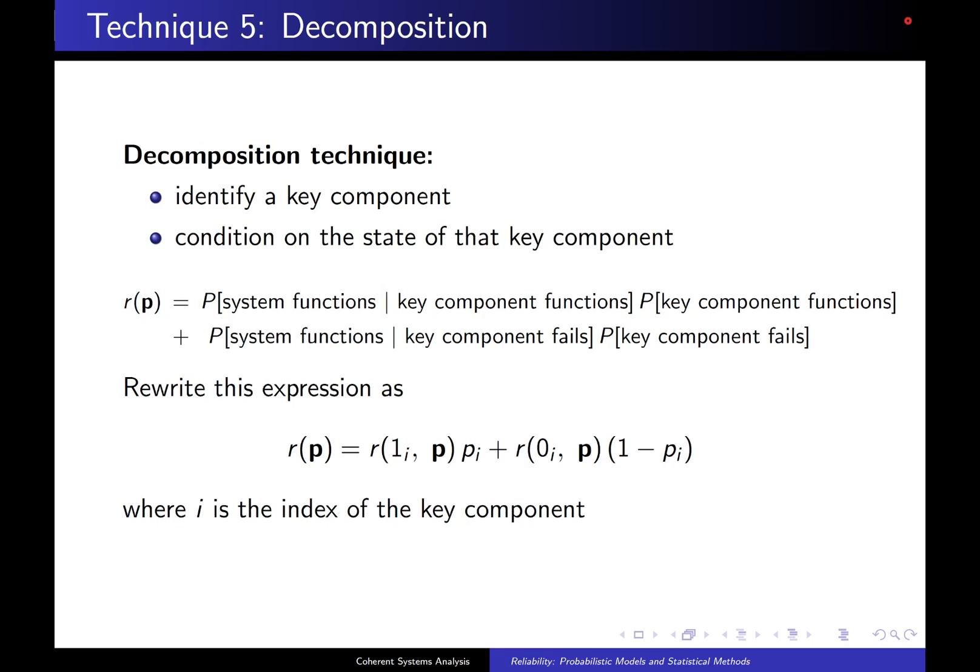Using the decomposition technique, the reliability function is written as the probability that the system functions given the key component functions times the probability that the key component functions plus the probability that the system functions given the key component fails times the probability that the key component fails. So this is just a simple application of conditional probability.